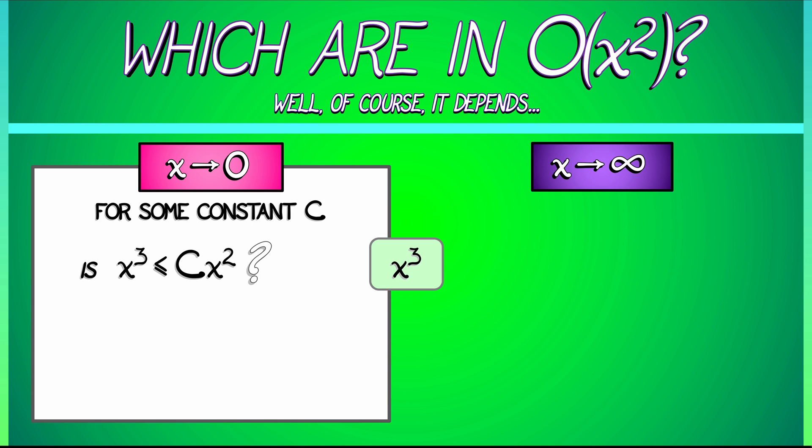Well, does that work? If x is a really tiny positive number, then x cubed is tiny times tiny times tiny. And that's much smaller than x squared. No matter what constant you pick in the limit as x goes to zero, the quadratic bounds the cubic. So, x cubed is in big O of x squared as x goes to zero.